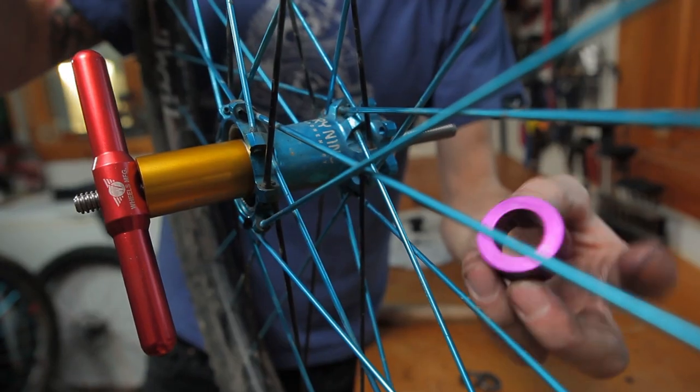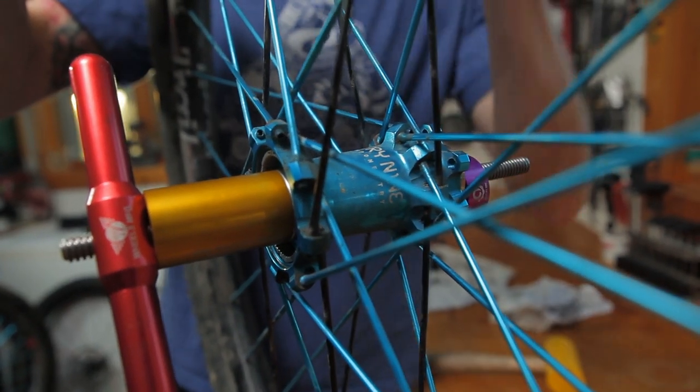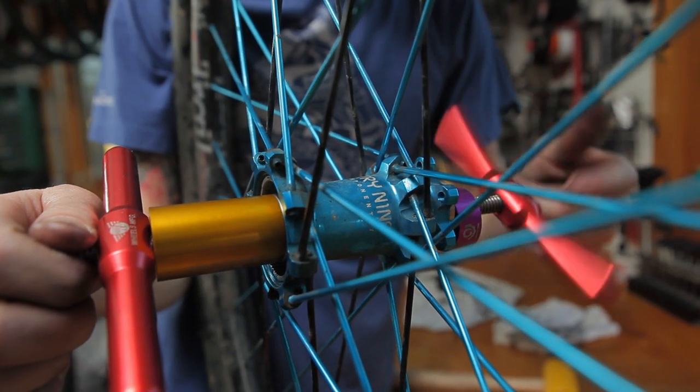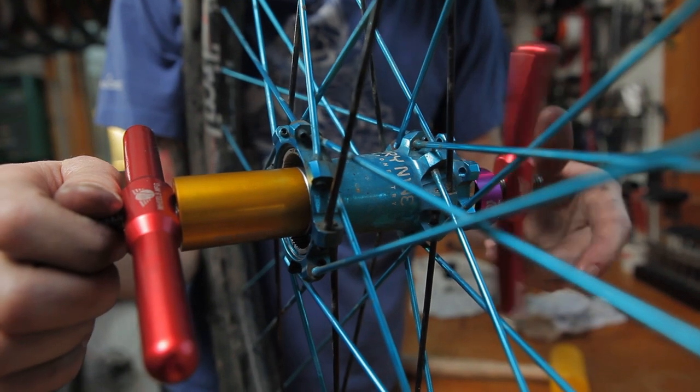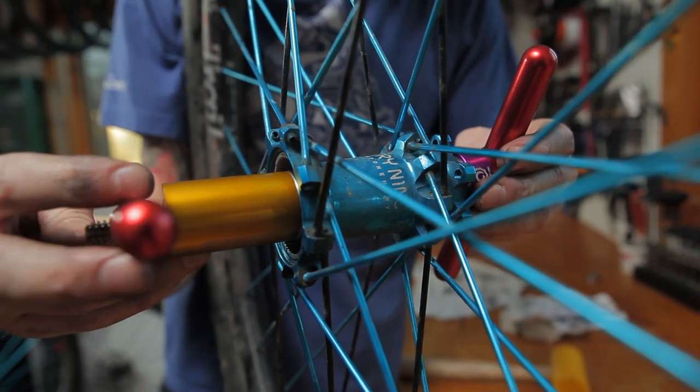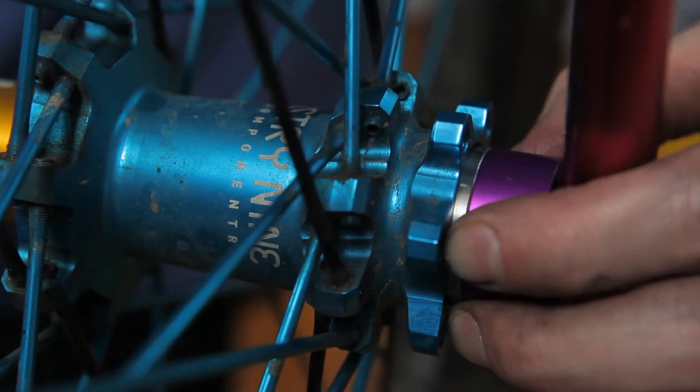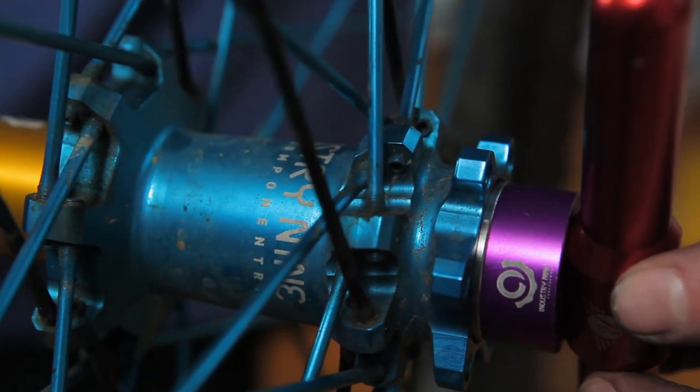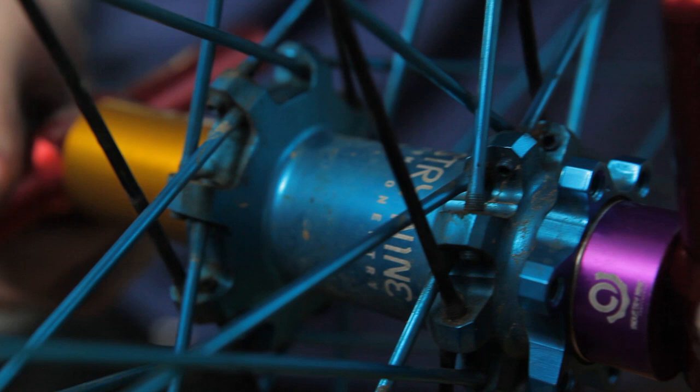You can put your bearing press in place now. With your press in place and your adapter centered, you can begin pressing your bearings. Tighten your press until both bearings stop fully in their seat.